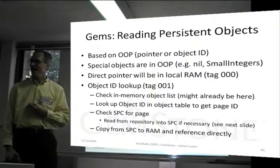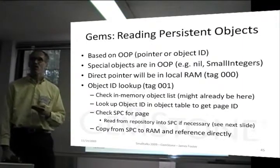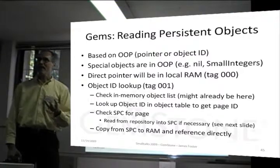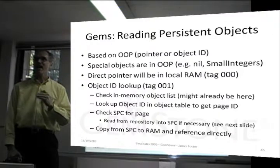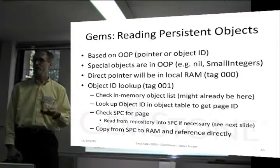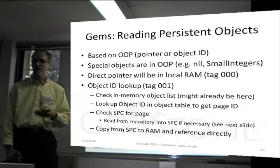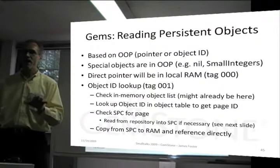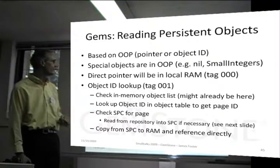If we're reading an existing persistent object, in order to read it, we have to have a reference to it. Any object that you're looking for, you'll have a reference to it, presumably from an instance variable in an object that you already have. We'll start from having an object ID or an object pointer, an OOP.